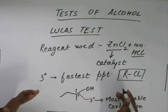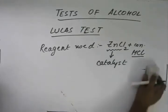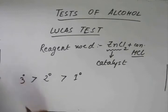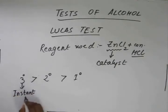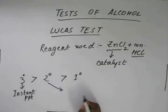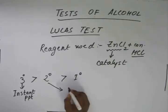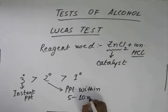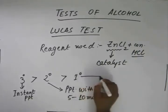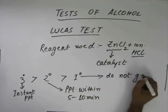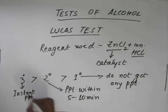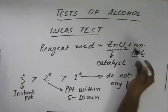3° alcohols form the precipitate fastest due to 3° carbocation formation, followed by 2° alcohol and then 1° alcohol. 3° alcohol forms the PPT instantly. In the case of 2° alcohols, the precipitate is formed within 5 to 10 minutes of the reaction. In the case of 1° alcohol, we do not get any precipitate.